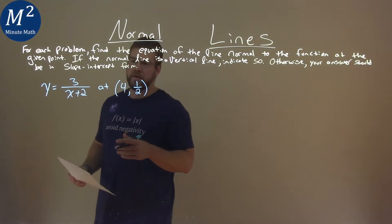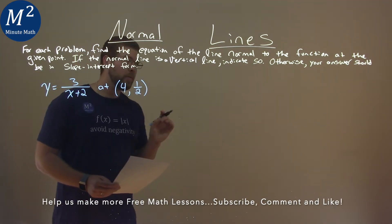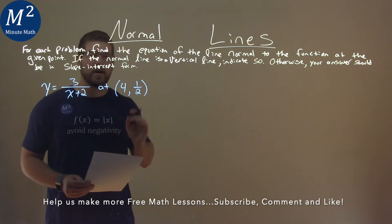We're given this problem right here, y equals 3 over x plus 2, and we want to find the equation of the line normal to this function at 4 comma 1 half.